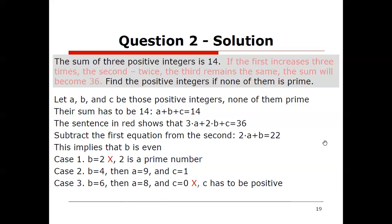Is that the only solution? Let's see if there are more. How about if b is 6? 22 minus 6, divide by 2, a would have to be 8. Plug that back into a plus b plus c equals 14. c is 0, and c has to be a positive integer. 0 is not positive. How about if b equals 8? a would have to be 7. But a can't be a prime. Well, it sure looks like we found the only solution.